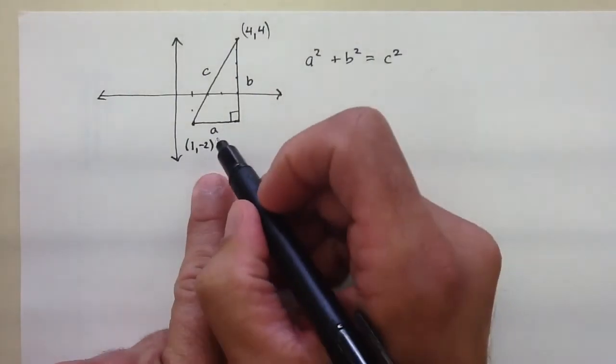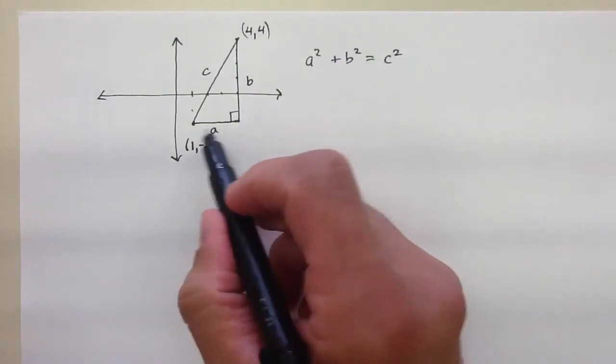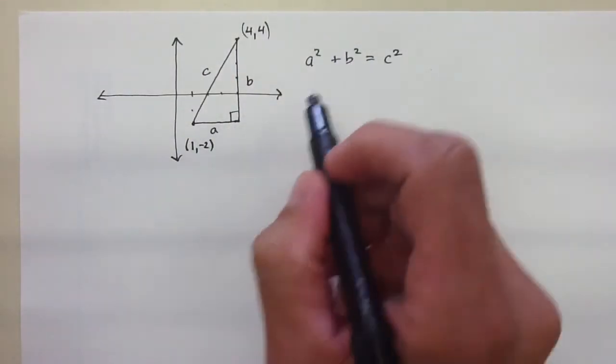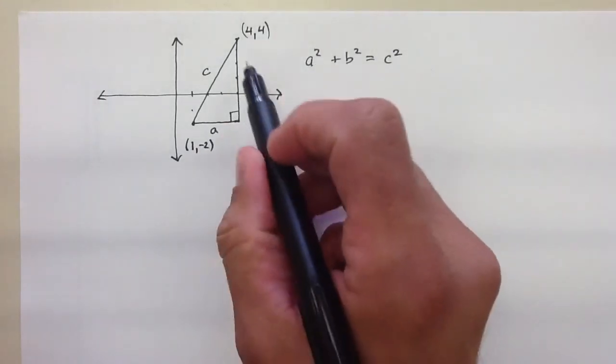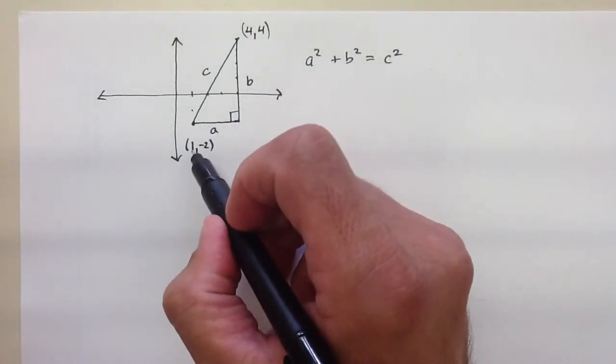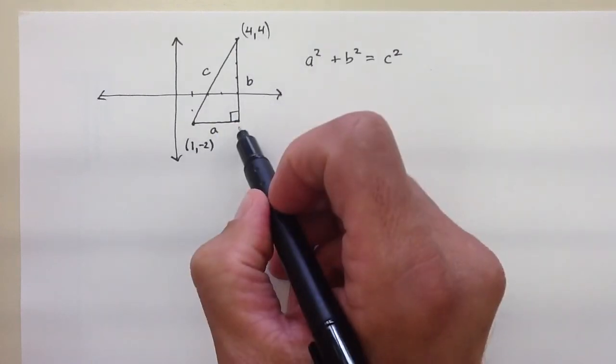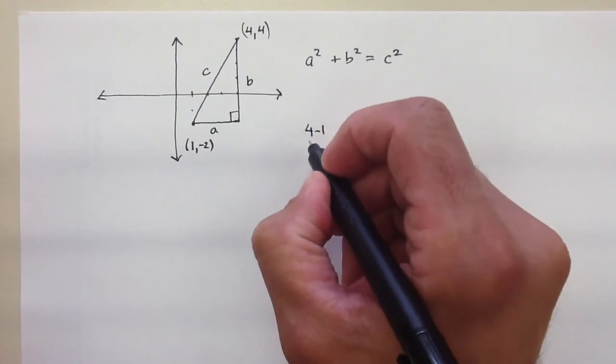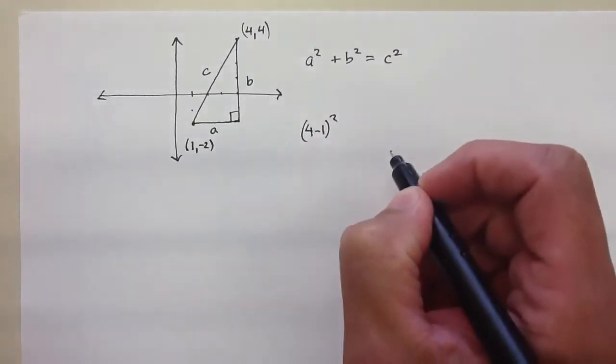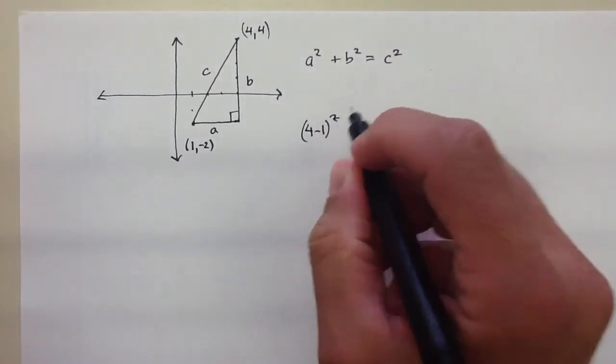So let's go ahead and, but you're asking yourself, well, wait a minute, I don't know what this distance is, but you really do, don't you? a is really just the distance between x here and this x here. So it's just 4 minus 1. And if I square that, I'll go ahead and do that.